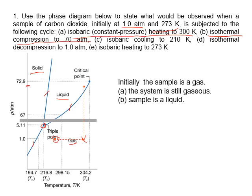Next, isobaric cooling to 210 kelvin — isobaric cooling means temperature goes down, so it's a horizontal line going to the left. 210 kelvin is somewhere here, and that point enters the solid region. The sample now solidifies into a solid after cooling to 210.